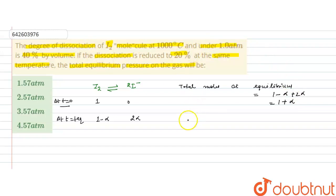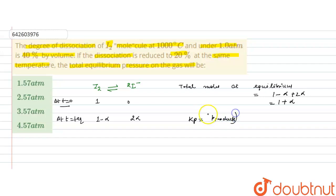Now we write the Kp for this reaction. Kp is the pressure equilibrium constant, equal to the partial pressure of products raised to their stoichiometric coefficients, divided by the partial pressure of reactants raised to their stoichiometric coefficients.